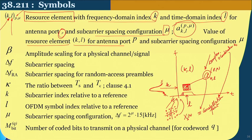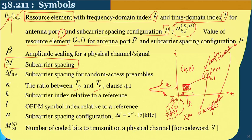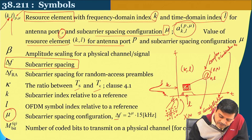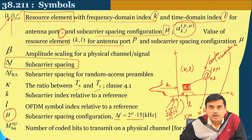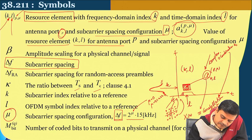Delta F is the subcarrier spacing, also an important parameter. The critical parameter mu is defined as: delta F equals 2 to the power of mu multiplied by 15 kHz. So mu can take different values — in case of 4G, mu was effectively 0. In case of 5G, mu can take values 0, 1, 2, 3, or 4. One of the major changes from 4G to 5G is that delta F can take different values, whereas it had otherwise remained constant at 15 kHz for the previous generation system.